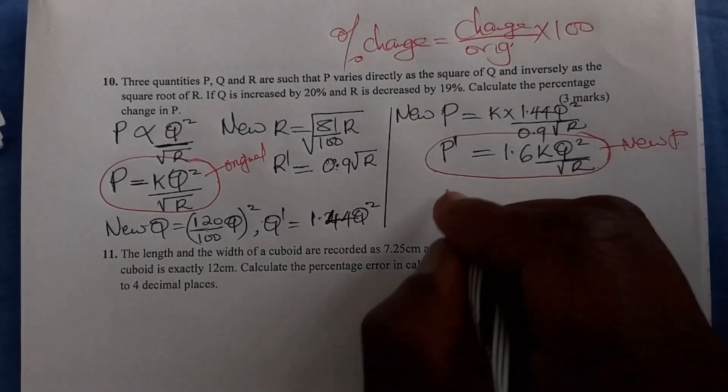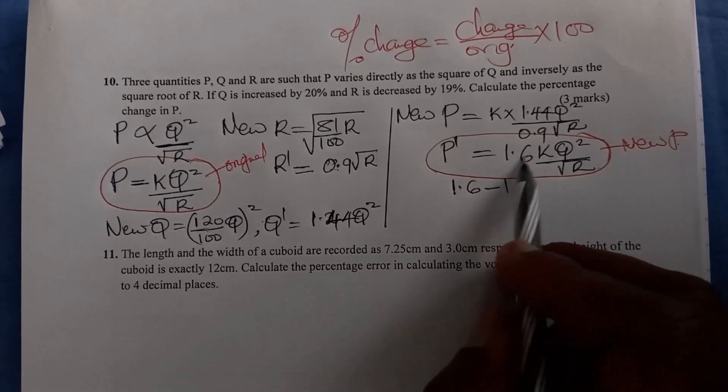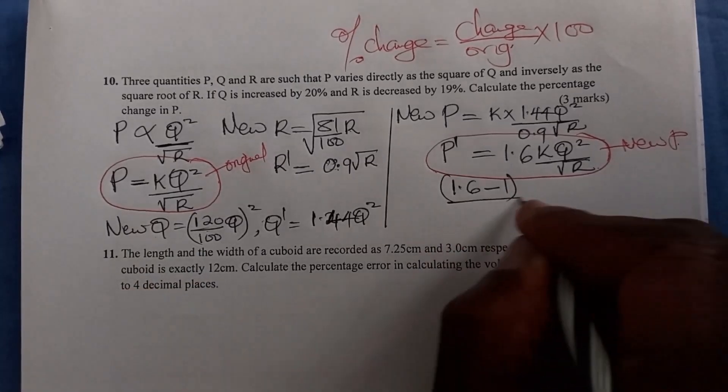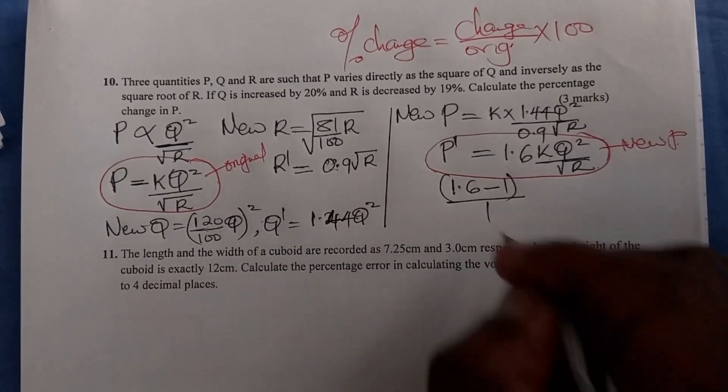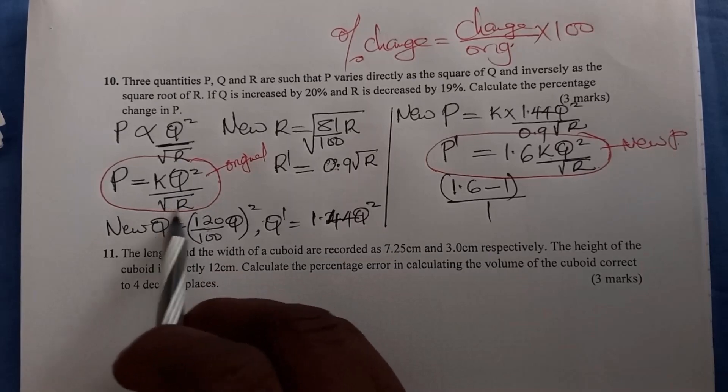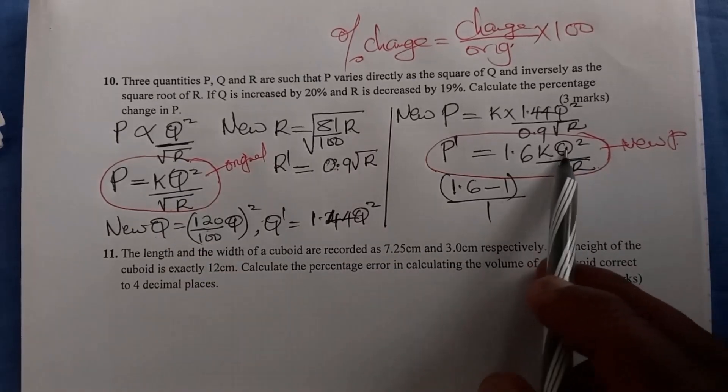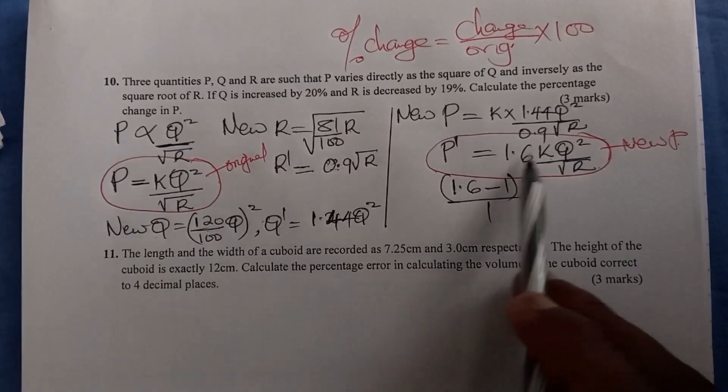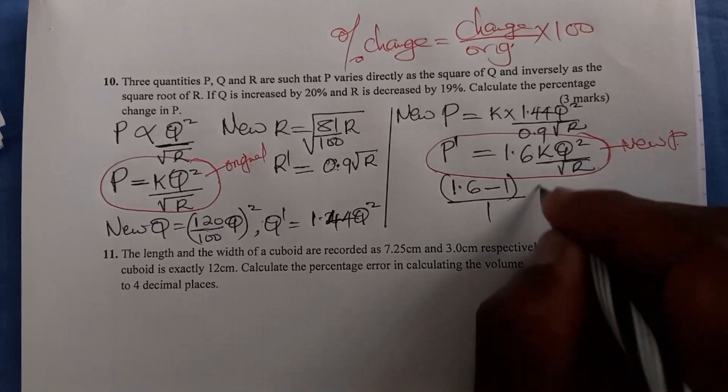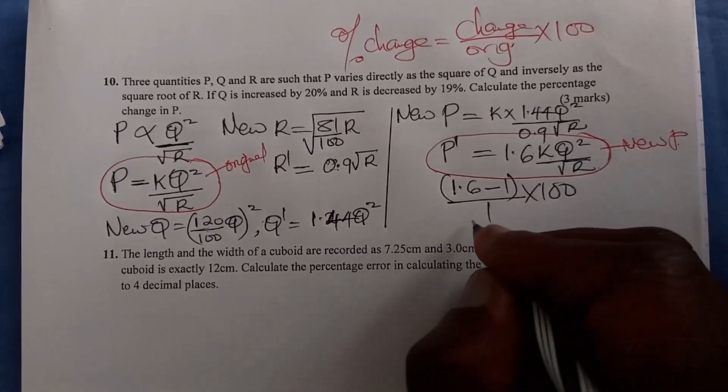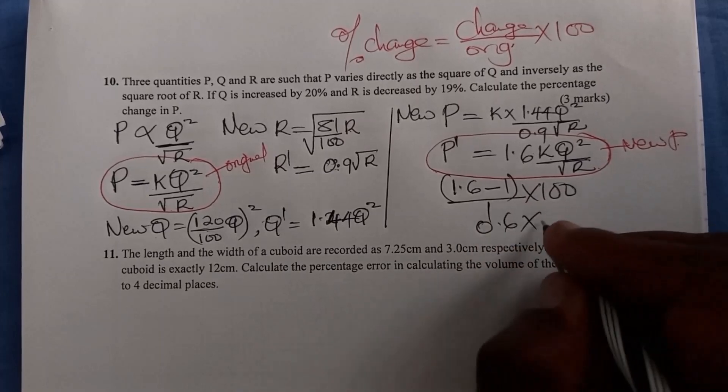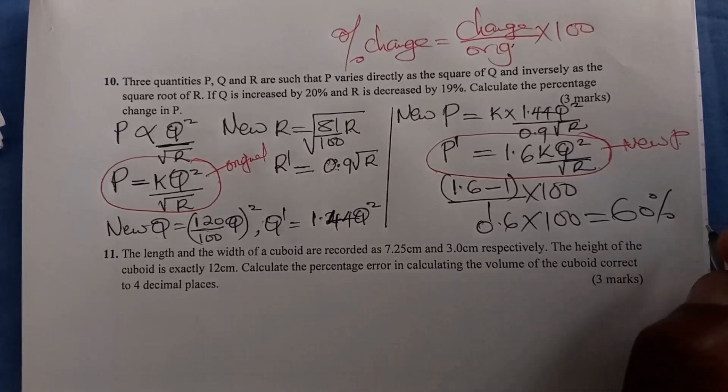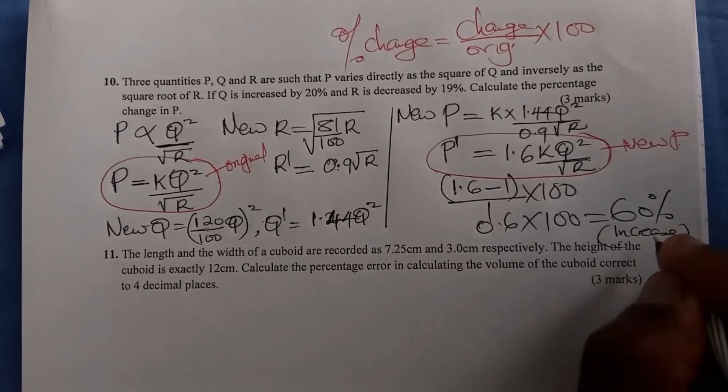The original is 1. I'm ignoring all the other parts - K Q squared divided by root of R - because that's found in both values of P. I'm just looking at the coefficient: original is 1, new is 1.6. So change is 1.6 minus 1 divided by the original times 100. This gives 0.6 times 100, which is 60%. Don't forget this is an increase - 60% increase. That is how you work out such a question.